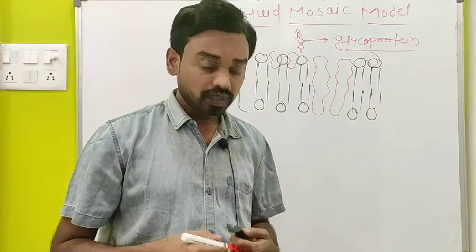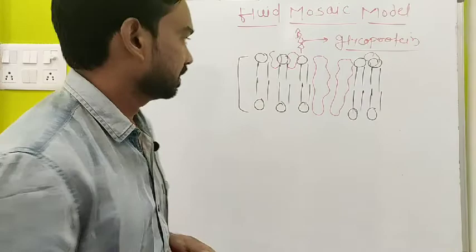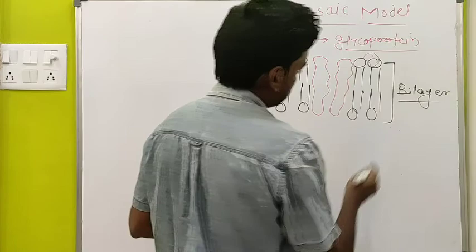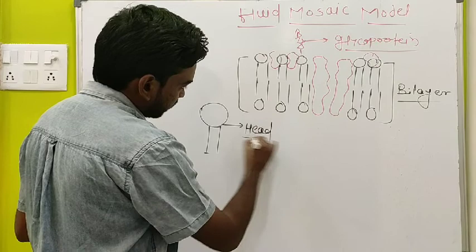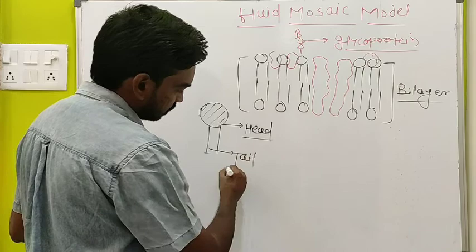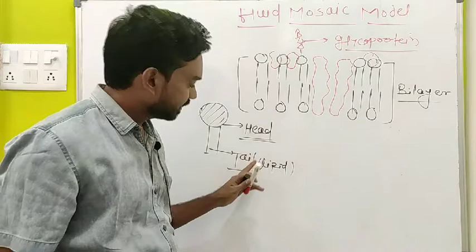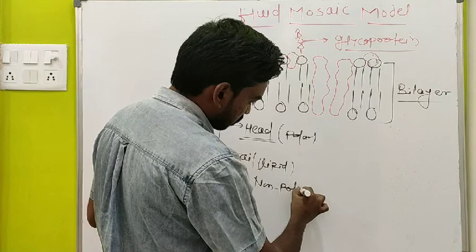The most accepted model is Singer and Nicholson. According to this model, the chemical nature of plasma membrane is a phospholipid bilayer. This is the bilayer — if you observe a single molecule, it looks like this: this is the head, which is made up of phospholipid, and this is the tail, which is made up of lipid. The head is hydrophilic and polar, while the tail is non-polar. This is the amphiphatic molecule.